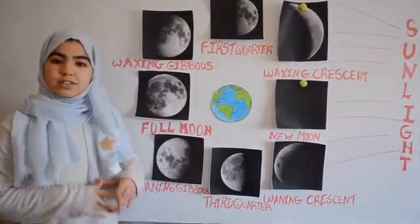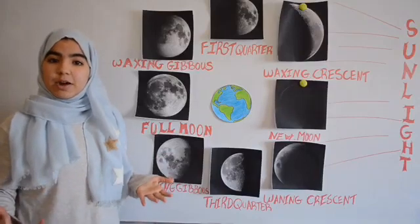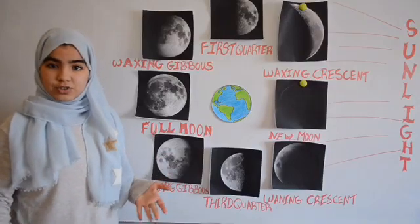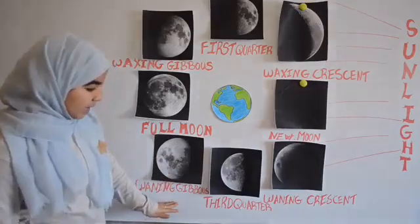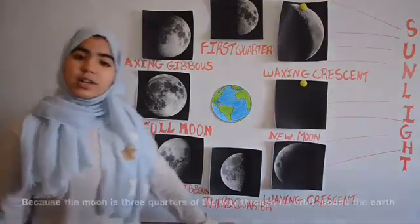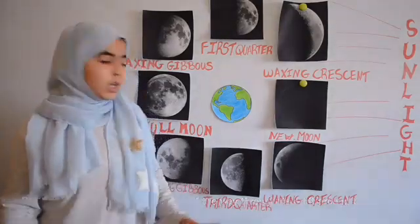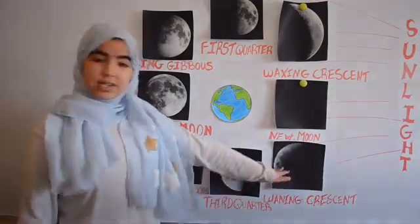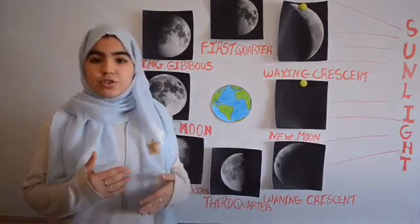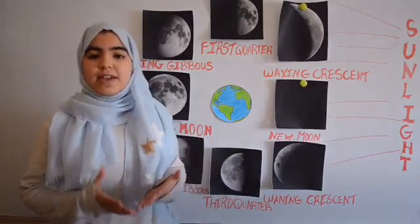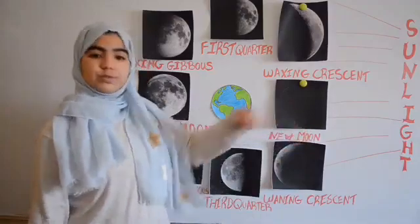As the days pass, the moon enters the waning process as its illuminated part starts to shrink — shrinking from a waning gibbous to another half moon called third or last quarter, to a waning crescent, and continues to shrink until it vanishes completely into the next new moon.